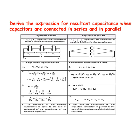Capacitors in parallel. Consider three capacitors of capacitance C1, C2 and C3 connected in parallel. Let this parallel combination be connected to a potential difference V. The potential difference across each capacitor is the same. The charges on the three capacitors are Q1 equal to C1V, Q2 equal to C2V, Q3 equal to C3V.